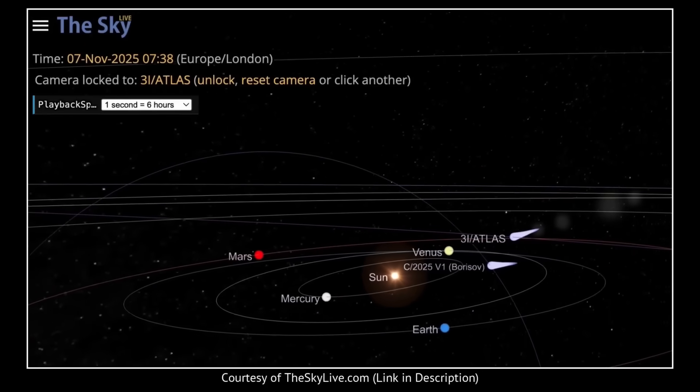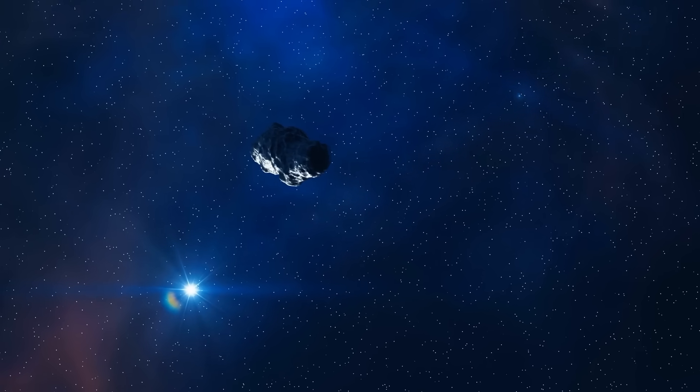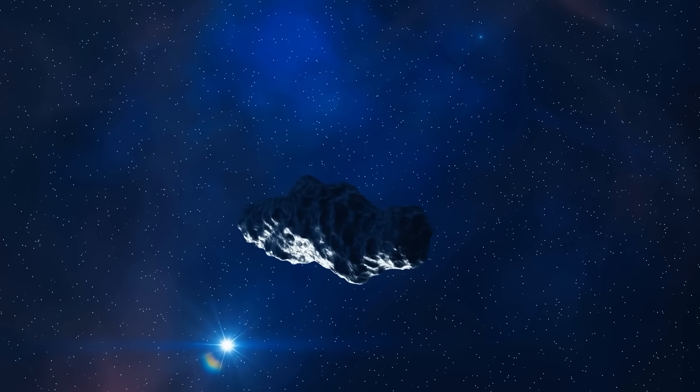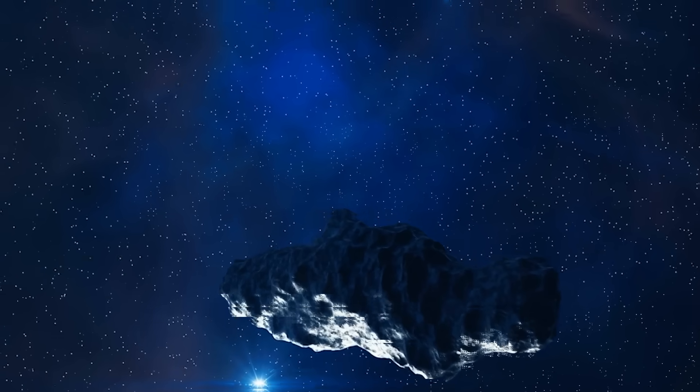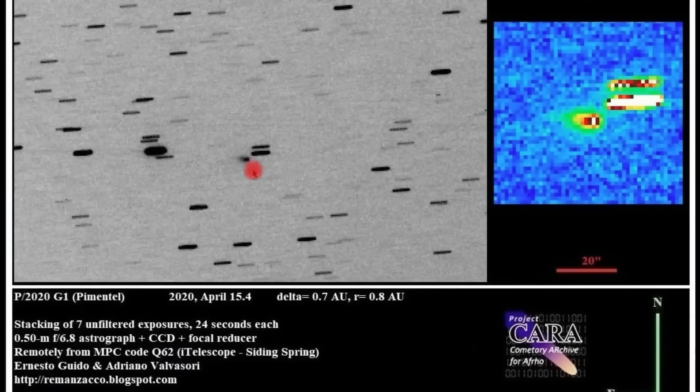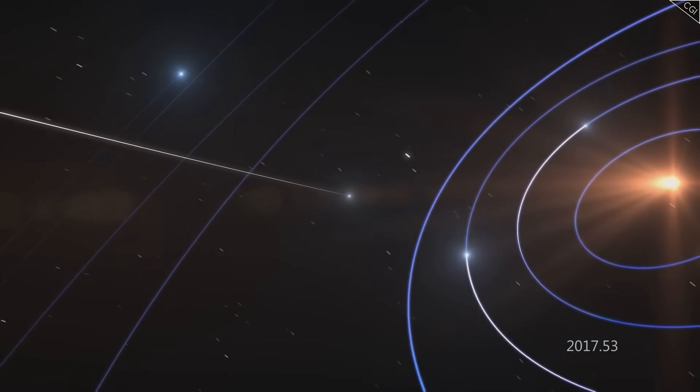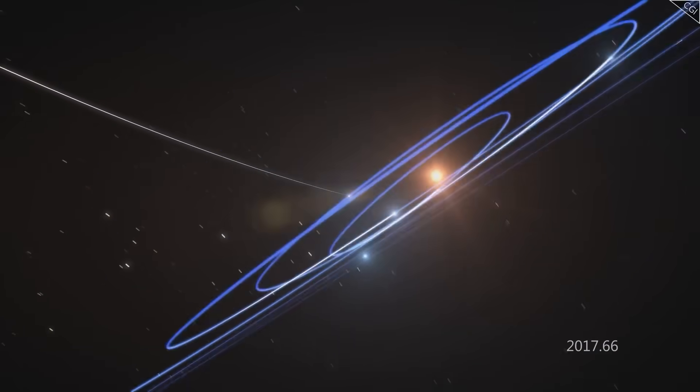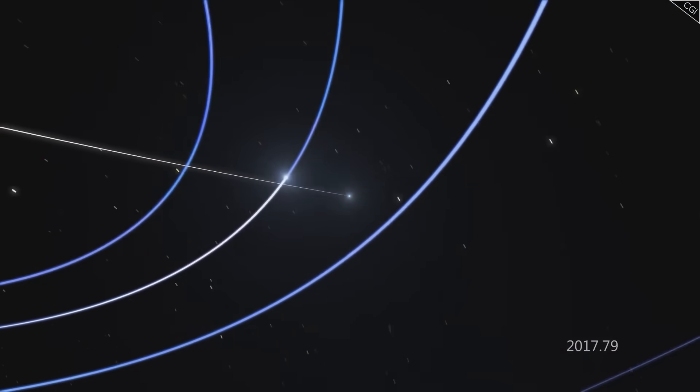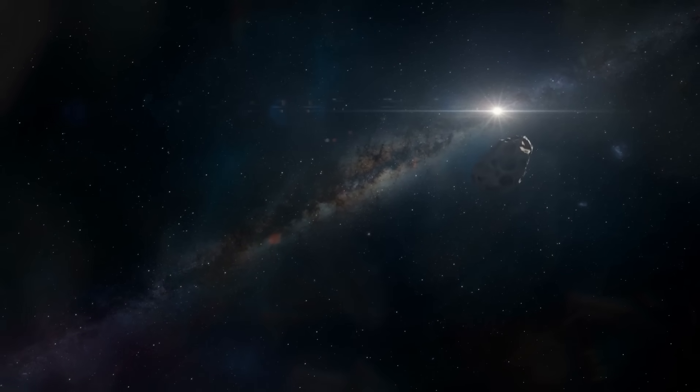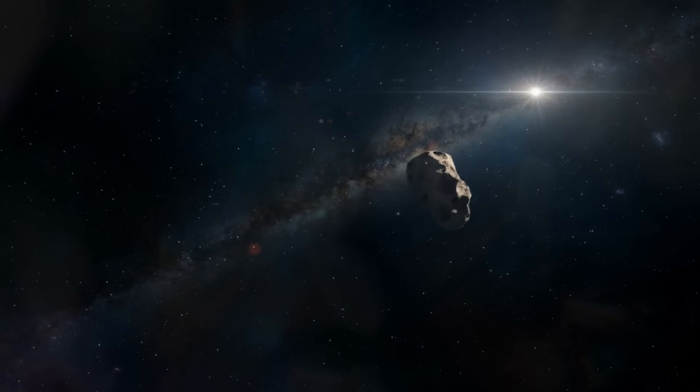The residuals went weird. If you've never heard that term, residuals are the tiny differences between where the model says 3i Atlas should be and where it actually appears in the sky. In a perfect world, residuals are zero. In the real world, they're always there. But they're supposed to be random. Small. Scattershot. Like noise. That's not what happened. They aligned. They formed a pattern. And the whole pattern leaned in a new direction.